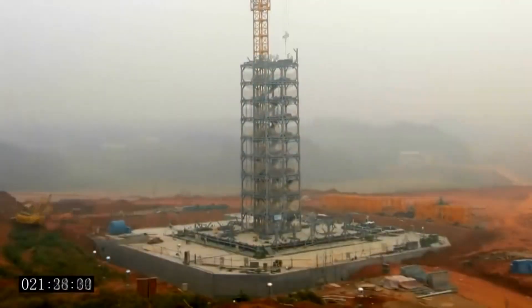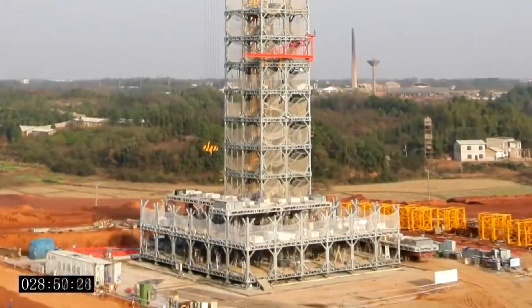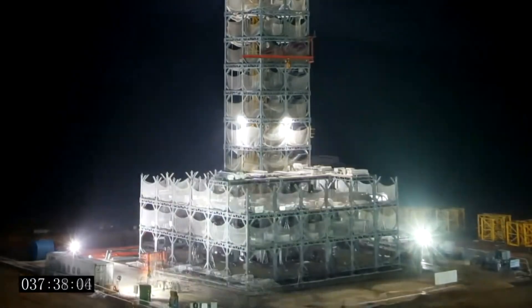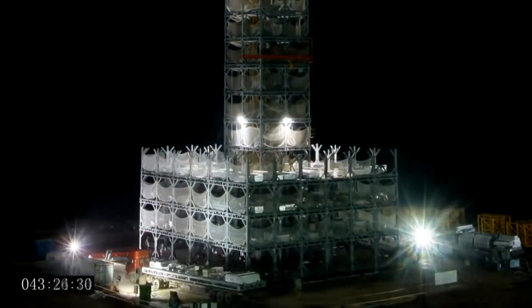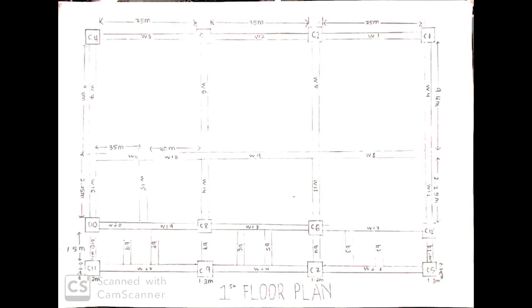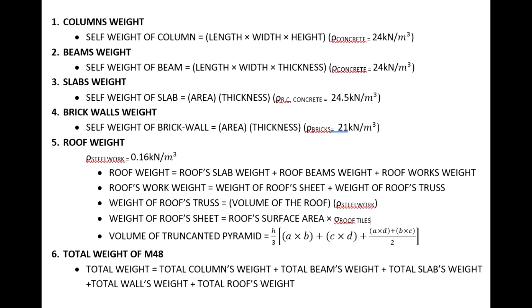From our discussion with our partner team, the structural engineering assignment requires calculating the total weight of a typical building. Our partners calculated the total weight of building M48. To do so, they first drew a sketch showing the structural layout and dimensions, then carried out approximate measurements of each part to calculate the weight of the roof, slab, beam, wall, and column based on the density of each material.